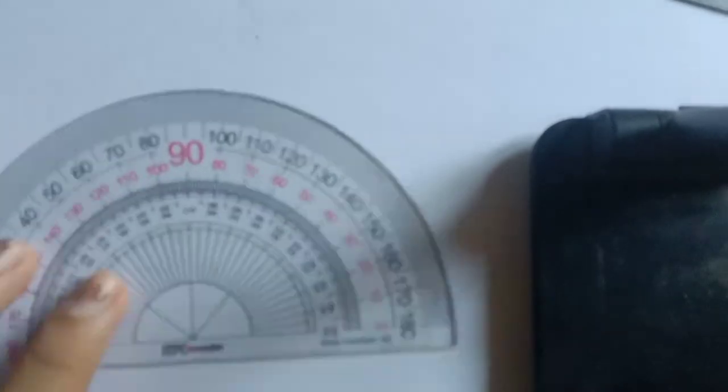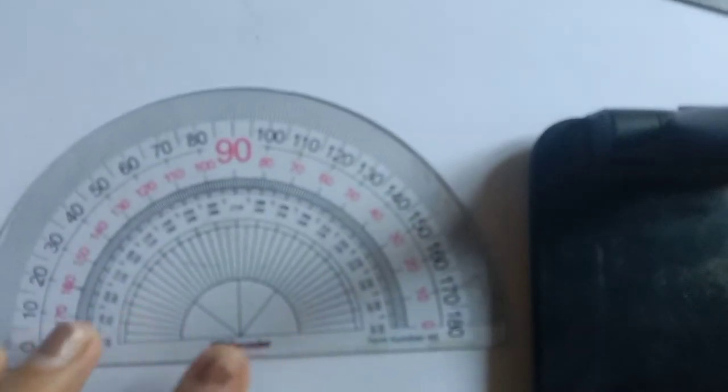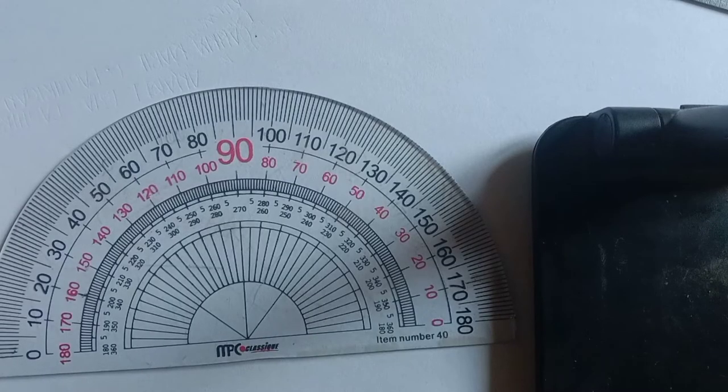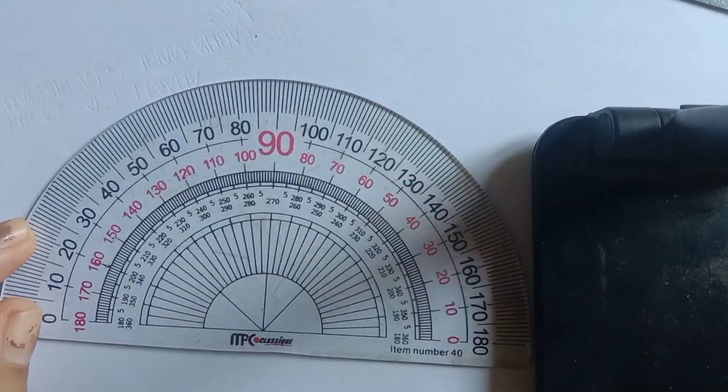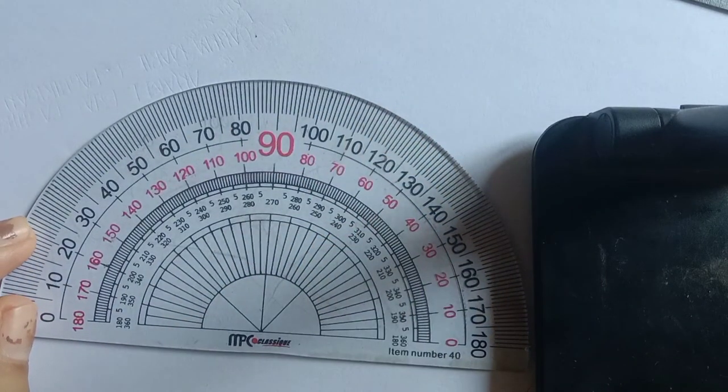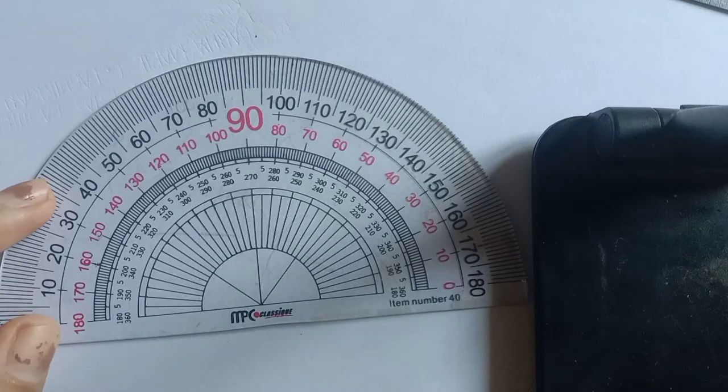The last tool that I will demonstrate is a protractor. It has two readings, the outer readings and the inner reading that help to measure a given angle. Always start with the 0.